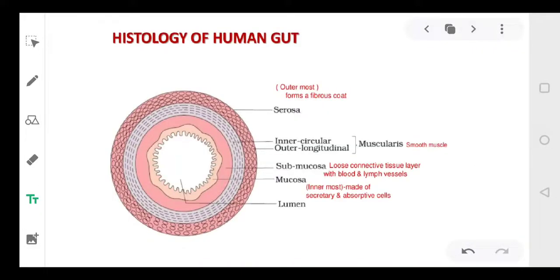This is the histology of the human gut. We have talked about the alimentary canal. It starts with your mouth and ends with the anus. If we take a section of the alimentary canal, it looks like this diagram. You can see a pink layer outside. This pink layer is named as serosa. It is the outermost fibrous layer.